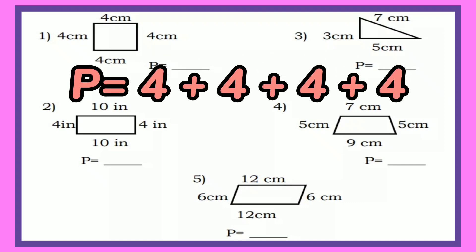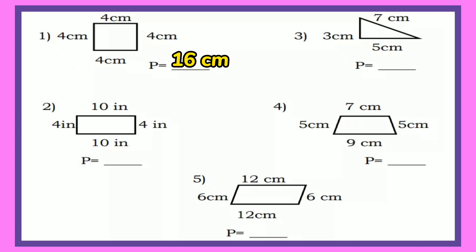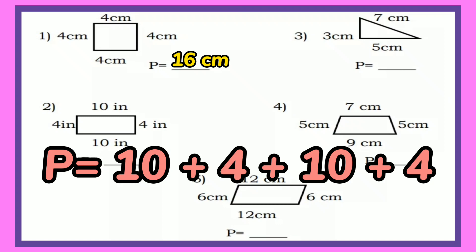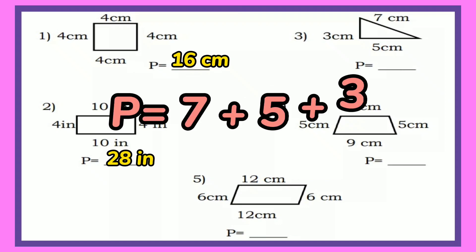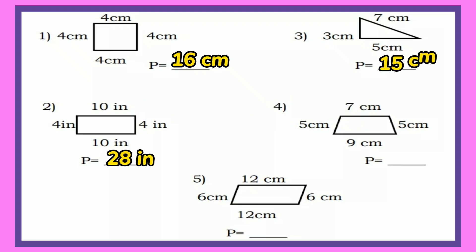4 plus 4 plus 4 plus 4 and the perimeter is 16 centimeters. Number 2: 10 plus 4 plus 10 plus 4 equals 28 inches. Number 3: 7 plus 5 plus 5 plus 3 and the perimeter is 15 centimeters.